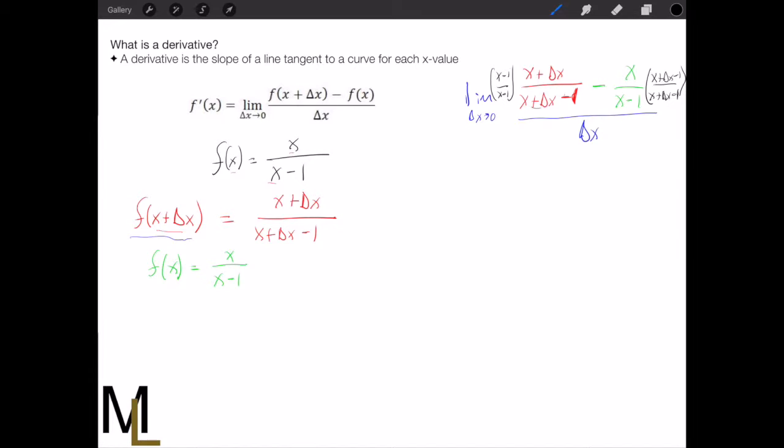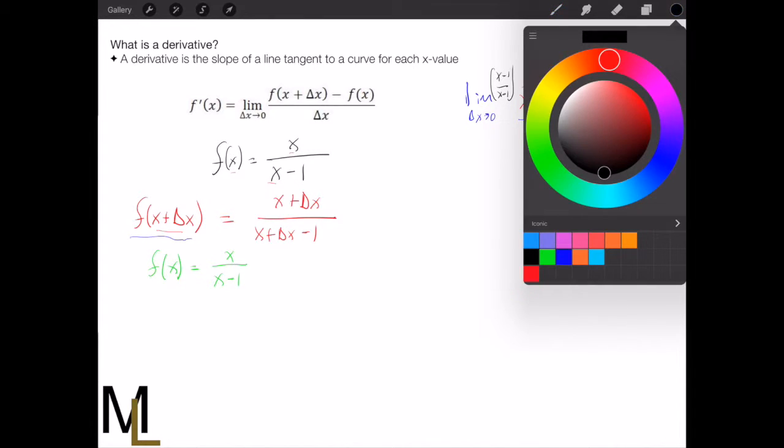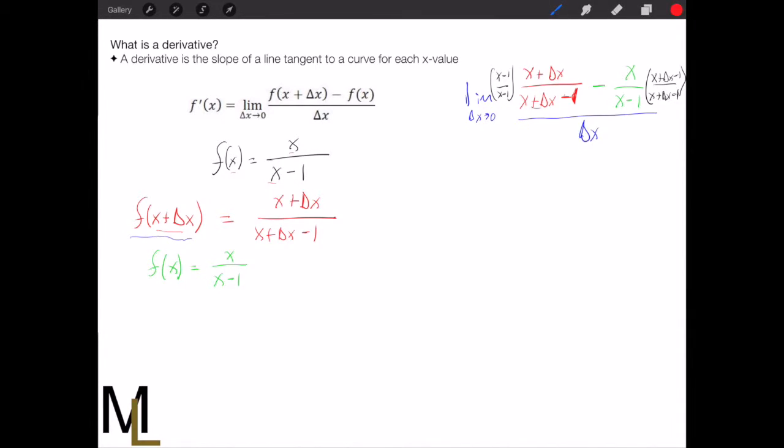And when you multiply these functions, what we can do is we have to multiply them straight across. So this first guy, I'm going to use red to show that I'm working on this term. This guy is going to become, if we multiply it out,